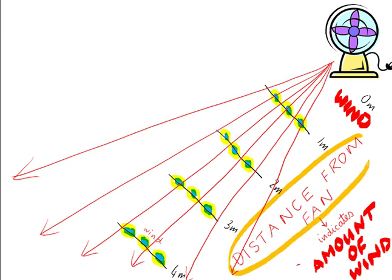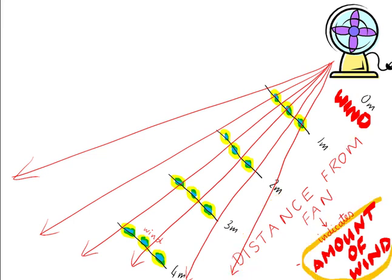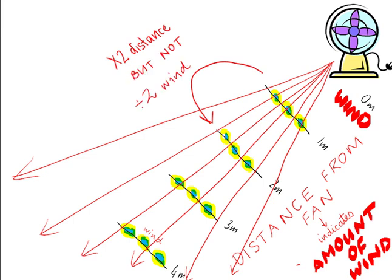Distance from fan doesn't correspond directly to amount of wind. Because if you double the distance from the fan, you aren't halving the amount of wind. Because amount of wind actually decreases by the square of distance. And so there isn't a perfect correlation between the indicator and the variable itself.